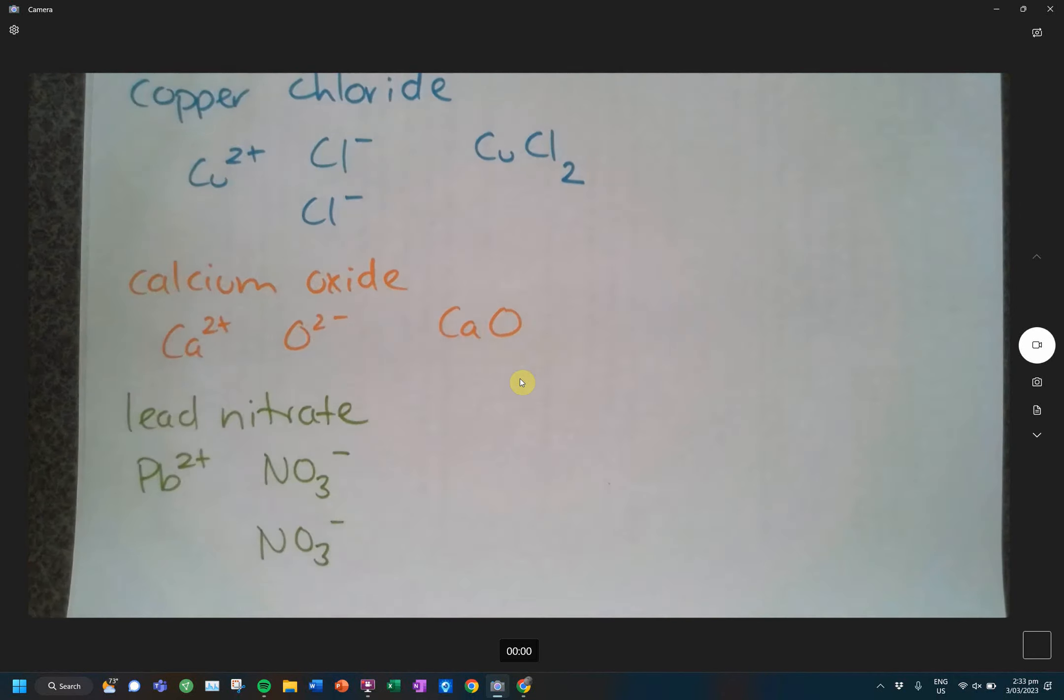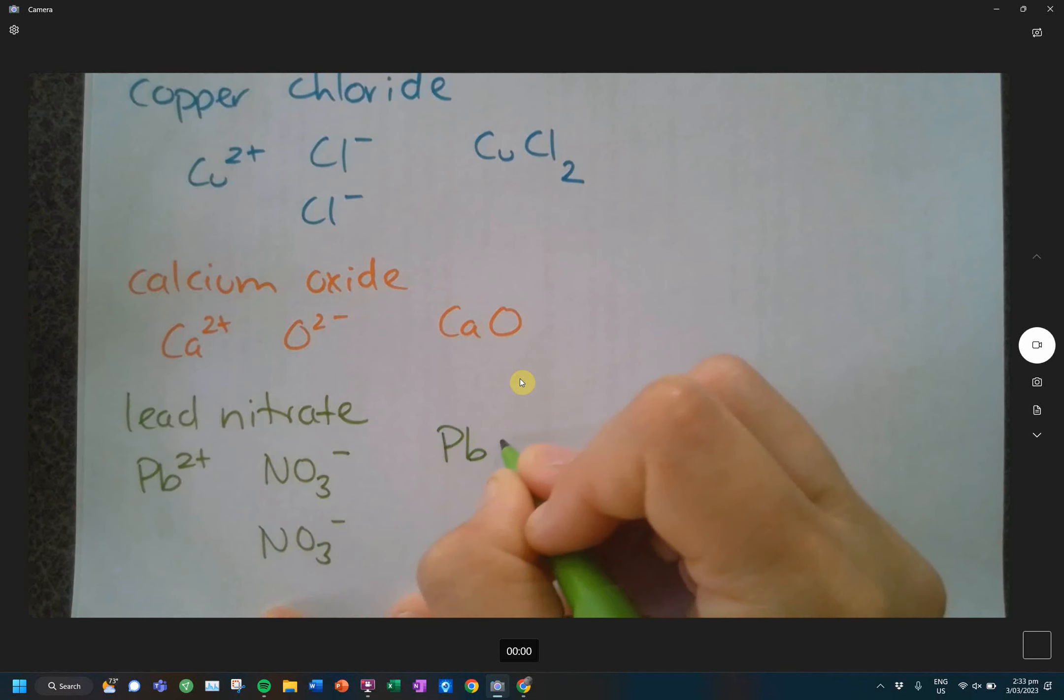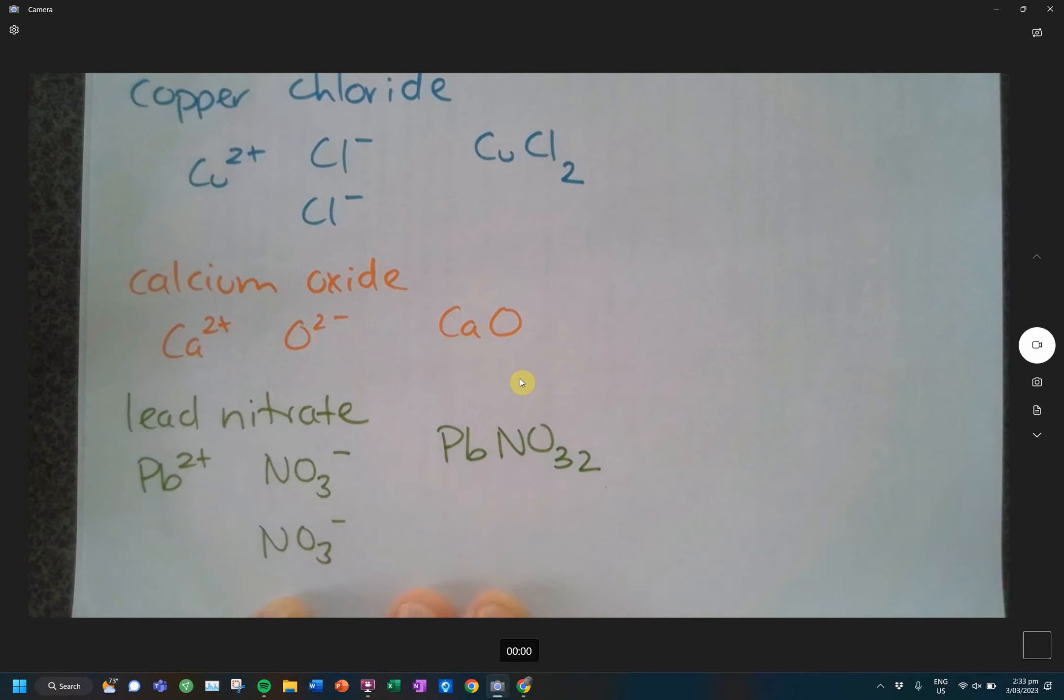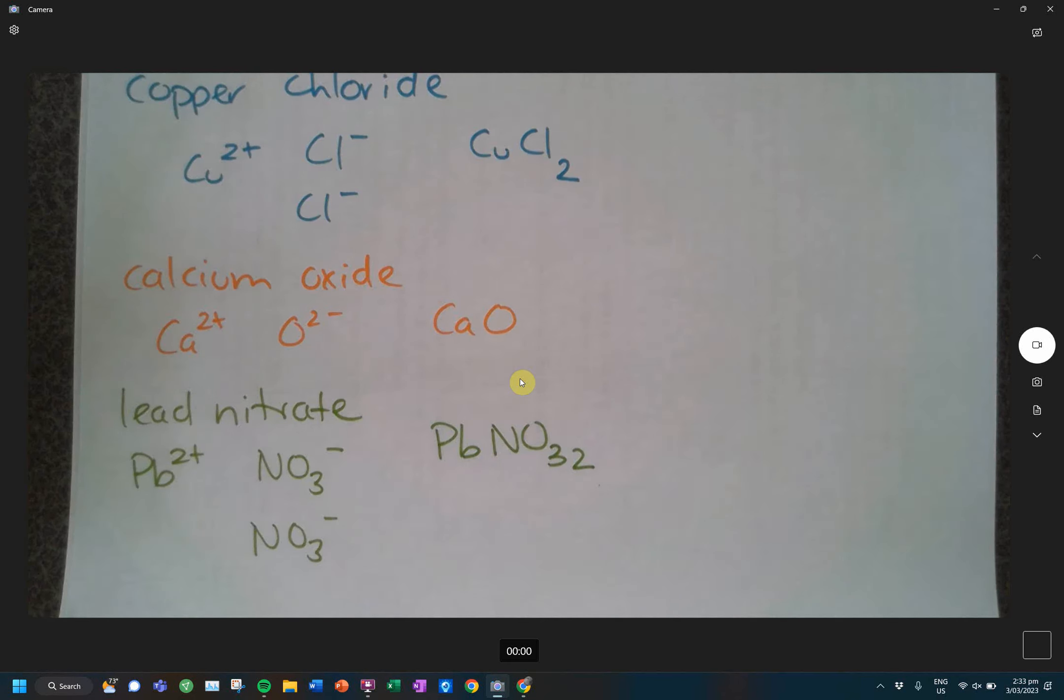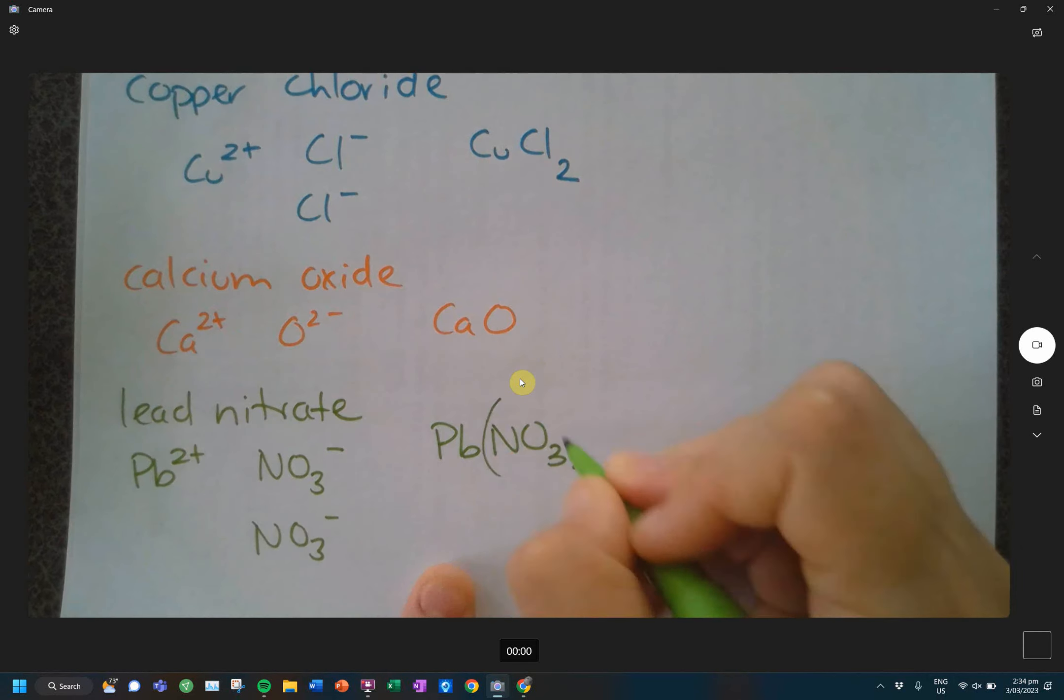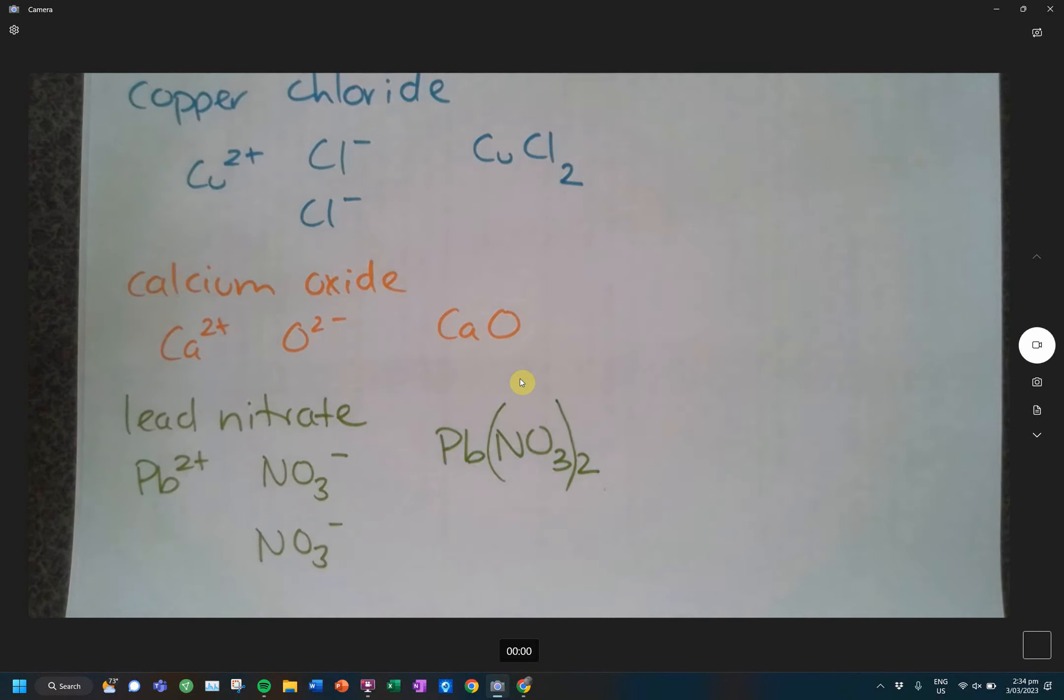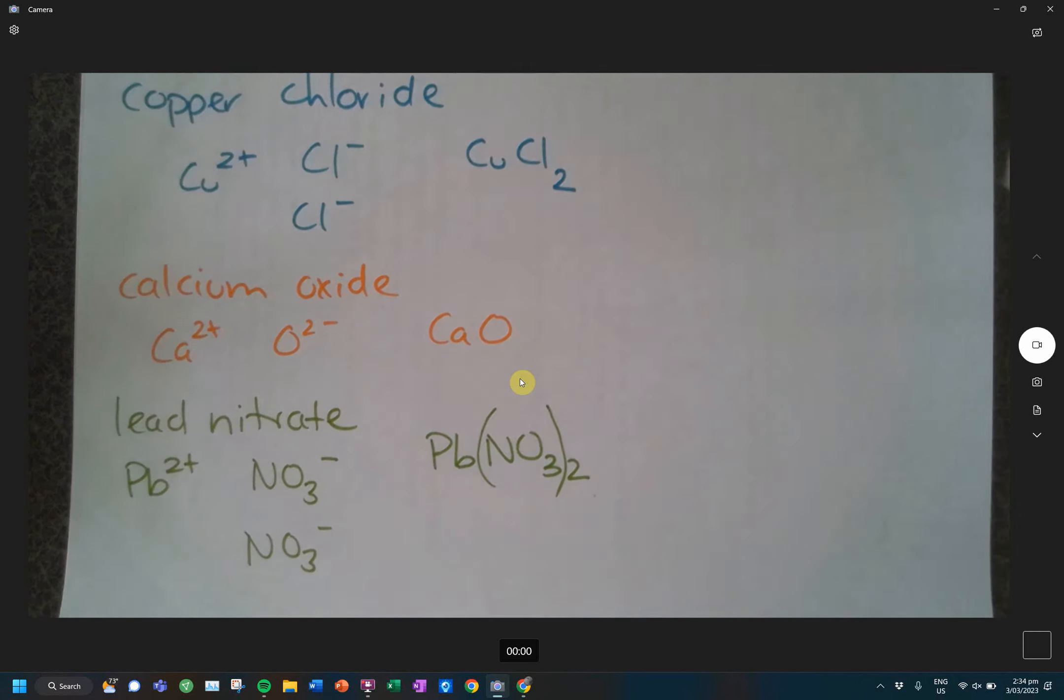Now, something to keep in mind when you have polyatomics. If you write this like that, because you're like, I need two nitrates. That is actually saying you have three times two oxygen, not two nitrates. So, when we're dealing with polyatomics, if we have multiple of them, we need to put them into brackets. Give them a nice little hug.